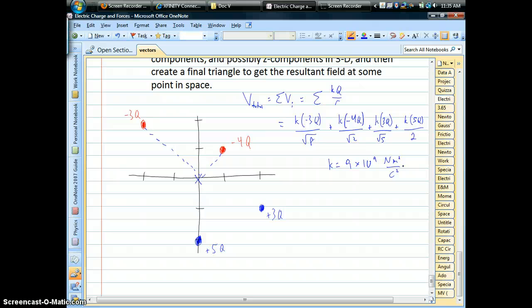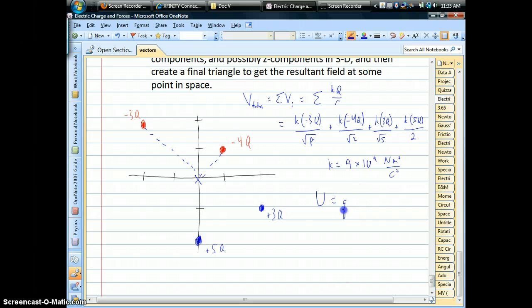The other thing to keep in mind is we could change this problem slightly and say, let's say you put a little test charge, a little q at the origin, how much energy, how much potential energy would it have? So if we know the voltage, we could just multiply it by the charge that we placed at the origin, and that would tell you how much energy that charge would have, how much energy you have in the system. That energy could be positive or negative depending on the numbers. Okay, so that's potential.